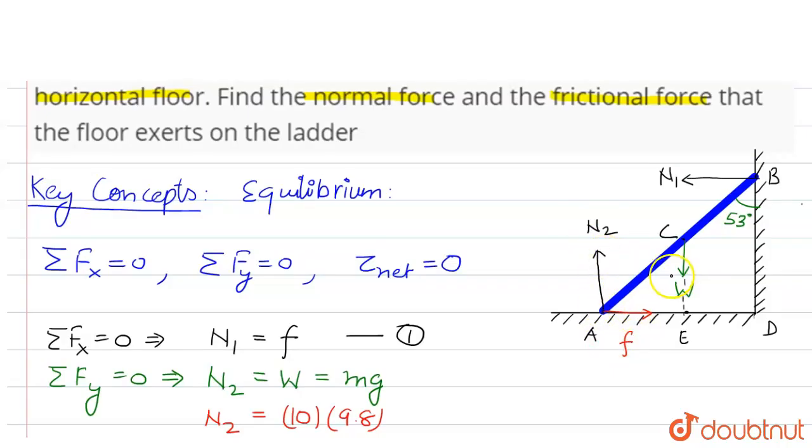And we'll have torque through W and N1. Torque because of W will be in the clockwise direction and torque because of N1 will be in the anticlockwise direction, so these two would be equal.